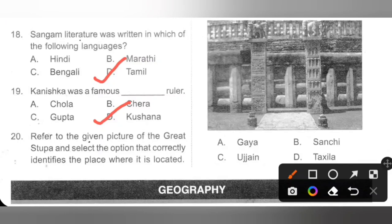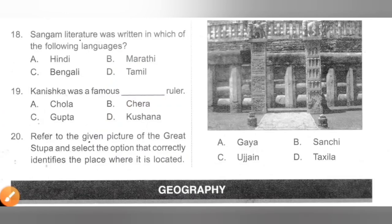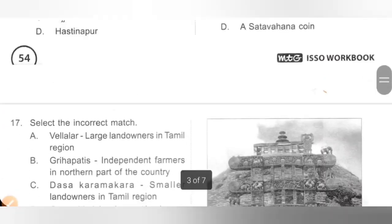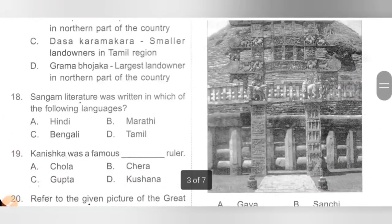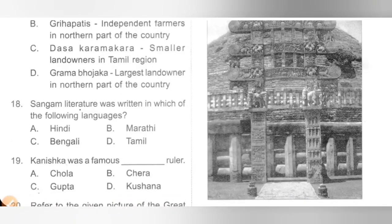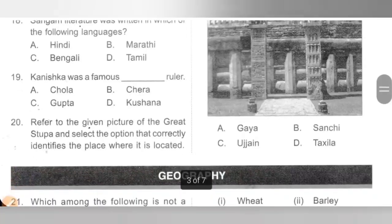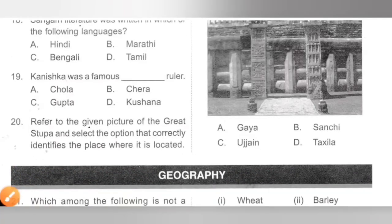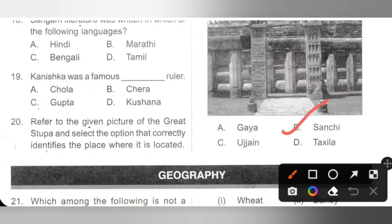Question 20: Refer to the given picture of the Great Stupa and select the option that correctly identifies where it is located. Please pause the video and check the image. The Stupa shown is located at Sanchi in Madhya Pradesh. Option B is the correct answer.